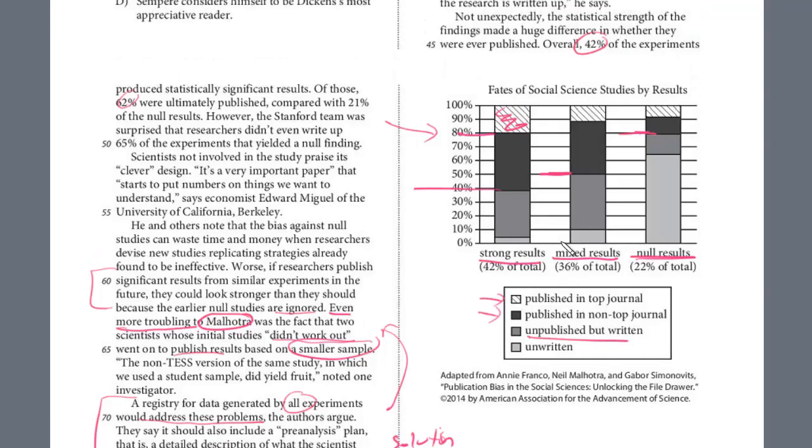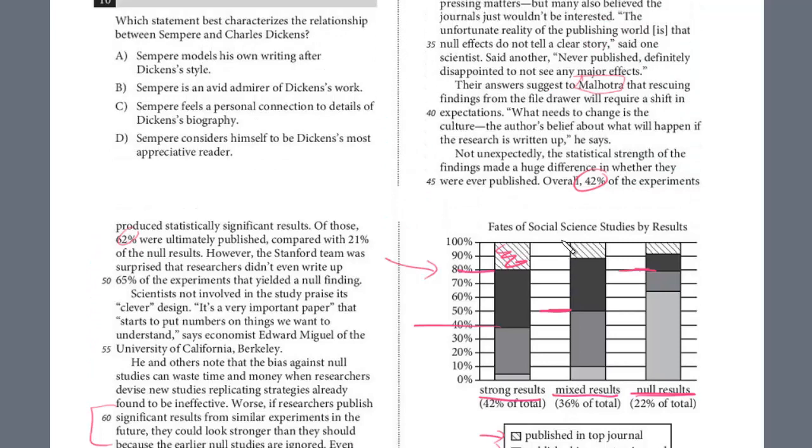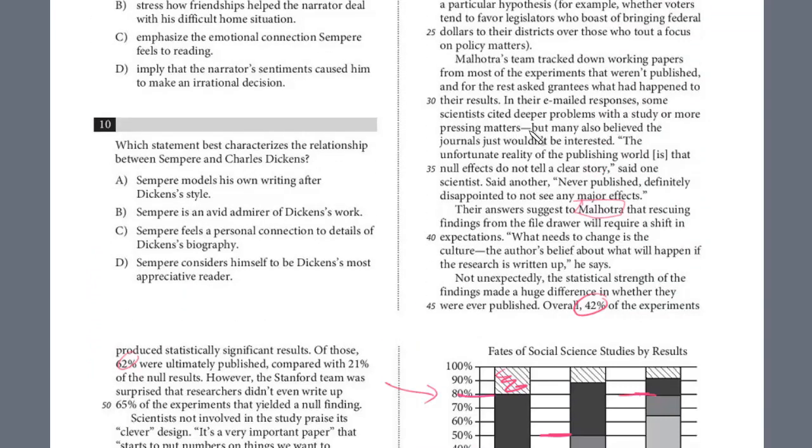So the first one is 30 to 32. So 30 to 32. In their emailed responses, some scientists cited deeper problems with a study, more pressing matters, but also believe the journalists. No, that doesn't really summarize what the graph states. Let's look at 33 to 36.